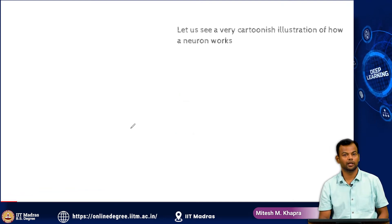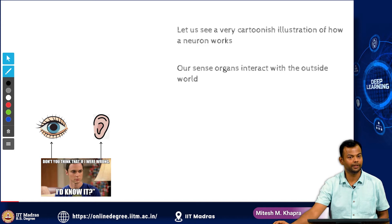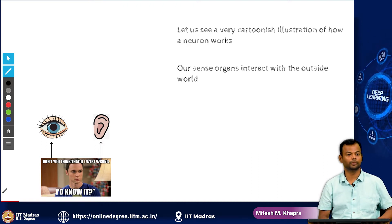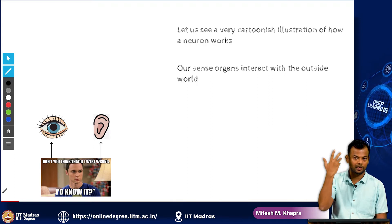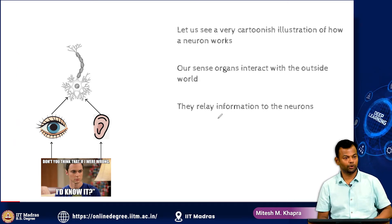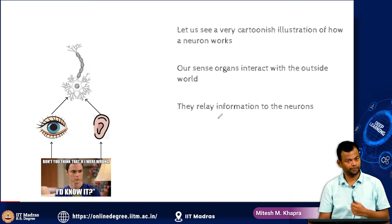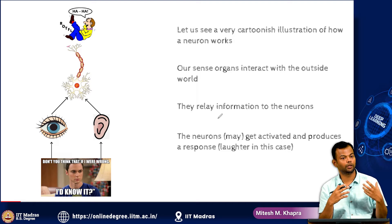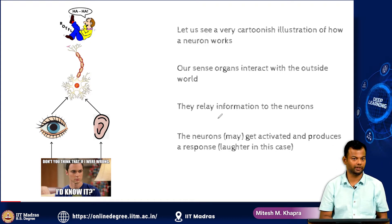Let us see a cartoonish illustration of how a neuron works. Our sense organs interact with the outside world — we see, we hear, and so on. Let us assume we are watching something funny, say something from Sheldon. Your eyes are seeing it, your ears are hearing it, and they relay information to the neurons. The neuron receives signals from the sensory organs, processes it, and then it might decide to take an action. If the neuron is excited enough — if this is really something very comical — then it might get activated and in turn signal to other neurons that we need to do something to evoke laughter. That is a very cartoonish illustration.